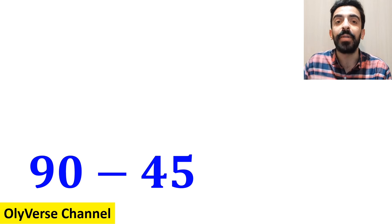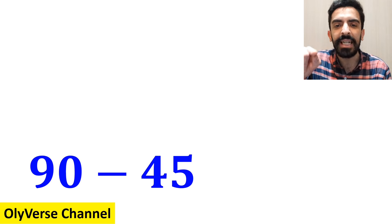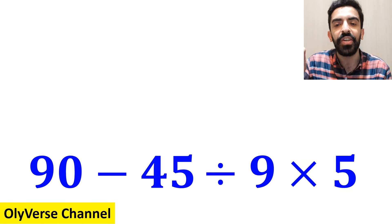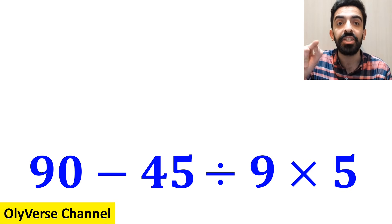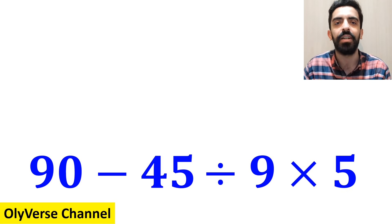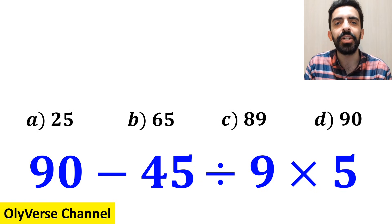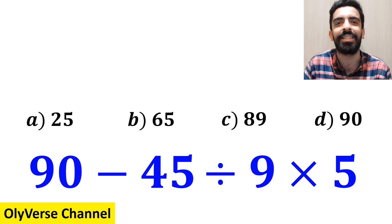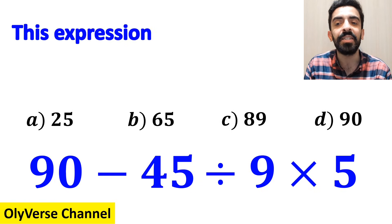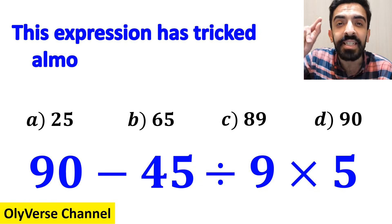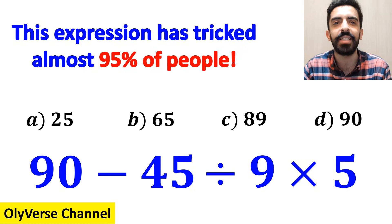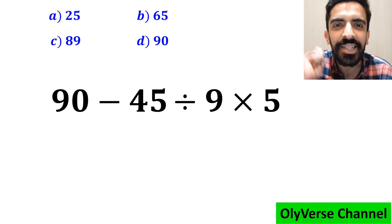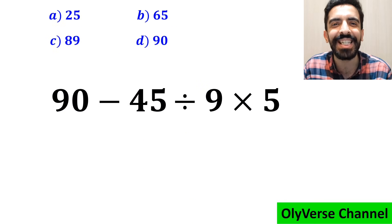What is the value of the expression 90 minus 45 divided by 9 times 5? Which option do you think is the correct answer to this question? This expression has tricked almost 95% of people. Let's break it down and solve it together.